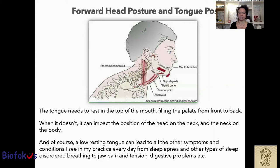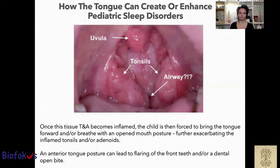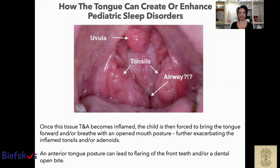I see in my practice every day — from sleep apnea and other types of sleep disorder and breathing issues, to jaw pain and tension, digestive problems, and many others. A problem with tongue posture can create or enhance pediatric sleep disorders. Once the tissues, tonsils and adenoids become inflamed, the child is often forced to bring the tongue forward or to breathe with an open mouth posture, further exacerbating the inflammatory tonsils and adenoids.